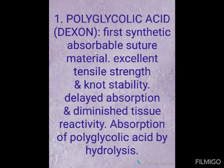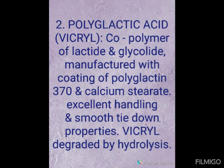Moving on to synthetic absorbable materials. The first is polyglycolic acid, with the example being Dexon. It was the first synthetic absorbable suture material, introduced in 1970, and it has excellent tensile strength and knot stability, with delayed absorption and diminished tissue reactivity compared to catgut. The absorption of polyglycolic acid is by hydrolysis, whereas catgut is absorbed by proteolysis.